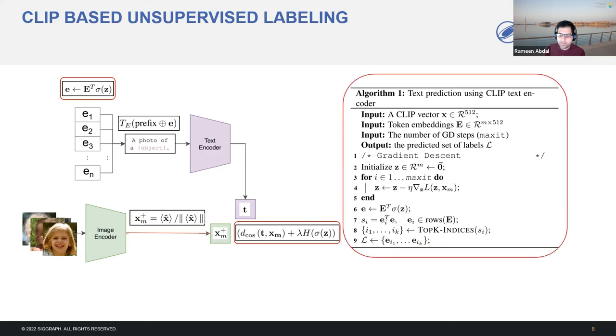Finally, after the backpropagation steps, we select top K indices from the embedding space E of the CLIP vector, which is close to the learned embedding given by E transpose sigma Z. Here, sigma is a sigmoid function. These text encodings then form a set of attributes, which can be used to further disentangle the direction.